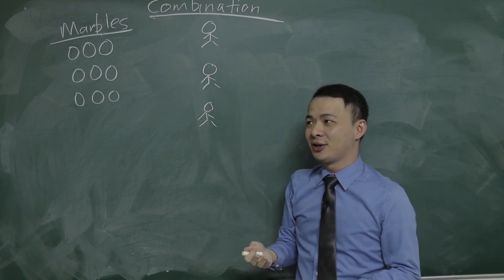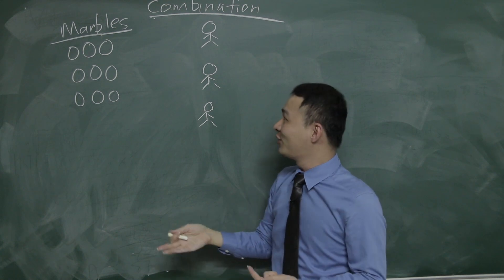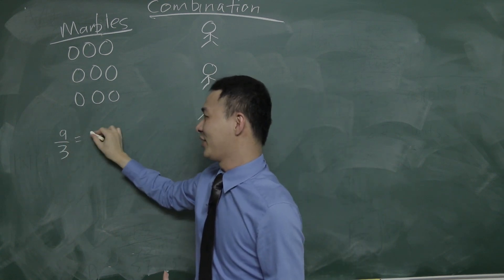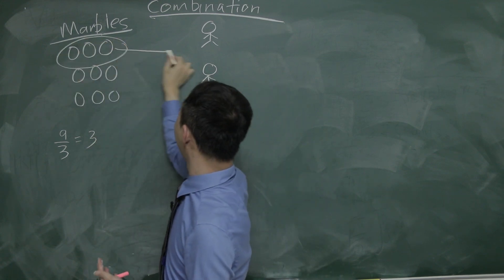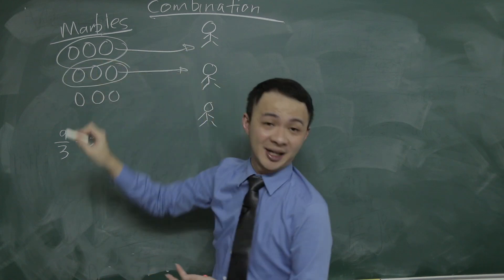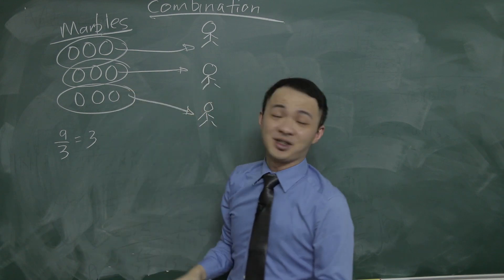So first thing is you need to know how to divide equally. So like nine, if you want to divide equally to three, so you just do nine over three, then you will get three. That means each child should get three marbles. So that means the three marbles here I will give to the first child, and then another three marbles here I will give to the second child.